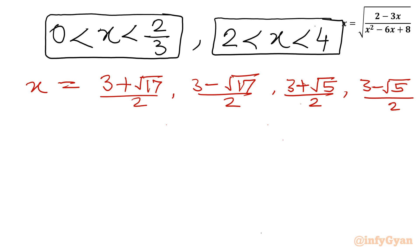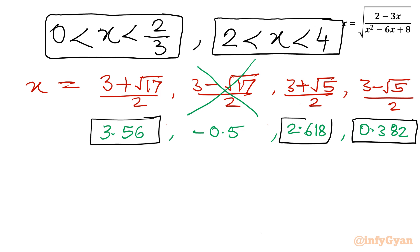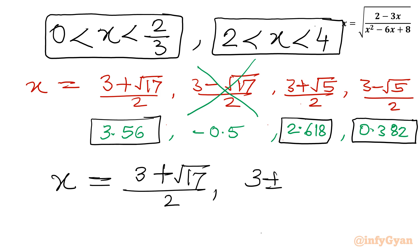So our accepted solutions are (3 plus root 17) over 2 — wait, that is rejected. The three real solutions are (3 minus root 17) over 2, (3 plus root 5) over 2, and (3 minus root 5) over 2. Three real solutions in total.